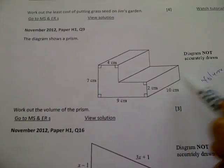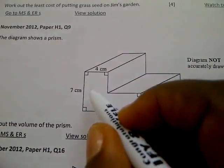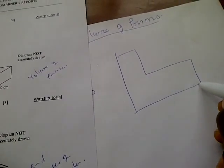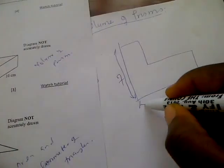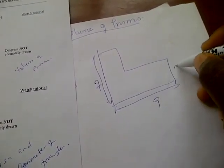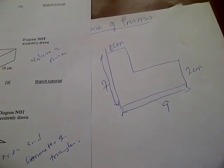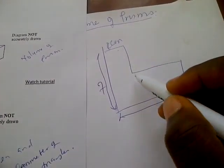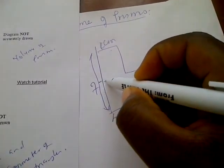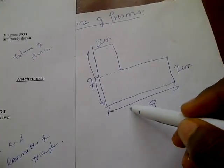Now calculating the volume of the second prism. We can see this complex shape is the base, and this length is the height of the prism. To find the base area, we draw the shape out. We're told the full width is 7, the full height is 9, one part is 2 centimeters wide, and another part is 4 centimeters tall.